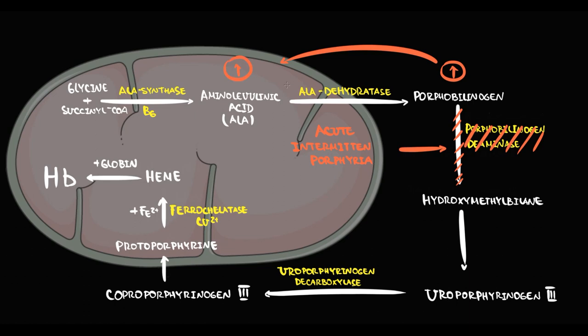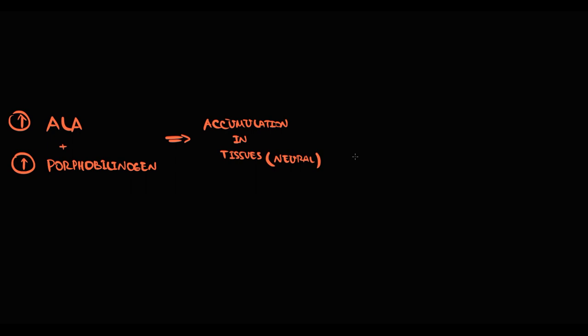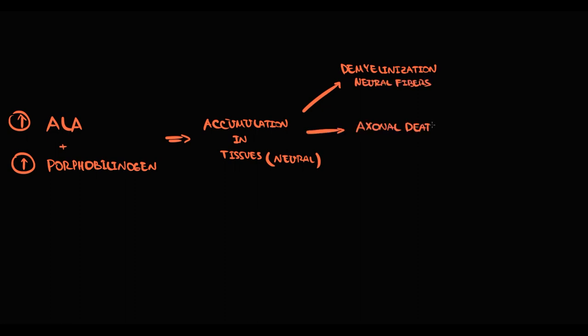Initially they will be progressively accumulating inside the erythroblast. But then with destruction of erythroblast they will be released into the plasma. So plasma level of both porphobilinogen and ALA will be elevated. The problem is that porphobilinogen and ALA begin to accumulate in various tissues throughout the body, but mostly in neural tissue. And deposition of porphyrins affects neural tissue in multiple ways. First of all it causes demyelinization of neural fibers. Also it causes axonal death and death of neurons in sympathetic ganglions.